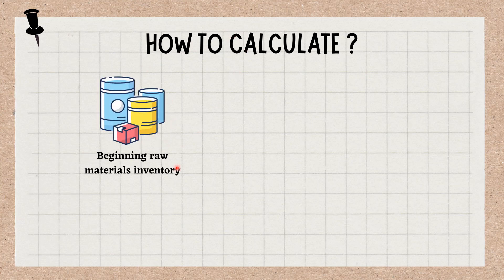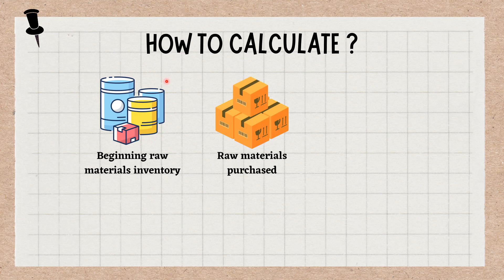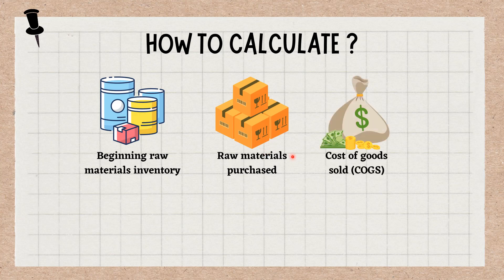Beginning raw materials inventory: the number of raw materials in your stock at the start of an accounting period. Raw materials purchased: the number of raw materials purchased during the accounting period in question. Cost of goods sold: the cost of purchasing or manufacturing the products that the business sells during a specific period, including all labor, materials, and overhead costs associated with the assembly process.